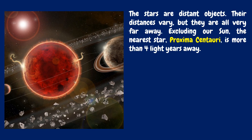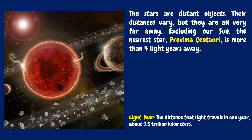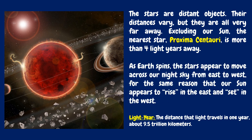The stars are distant objects. Their distances vary, but they are all very far away, excluding our sun. The nearest star, Proxima Centauri, is more than four light years away. A light year is the distance that light travels in one year, about 9.5 trillion kilometers. As Earth spins, the stars appear to move across our night sky from east to west, for the same reason that our sun appears to rise in the east and set in the west.